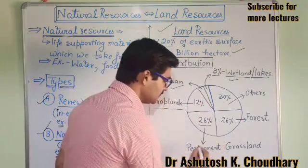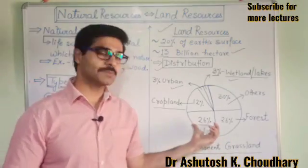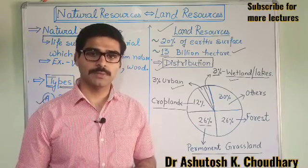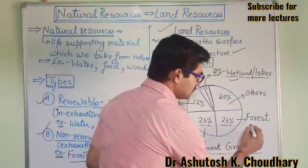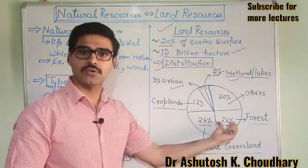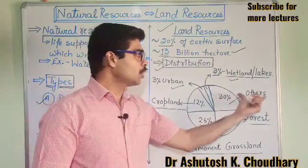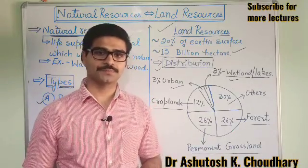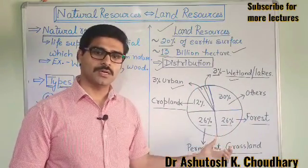Next 26% is covered by permanent grassland, meaning 26% of the land surface is occupied by permanent grasslands or permanent pastures. The next segment is occupied by forest, so that is 26% of the total. Now the remaining 30% is occupied by rocks, desert, ice, and glaciers. So this is all about the distribution of land resources on the earth.